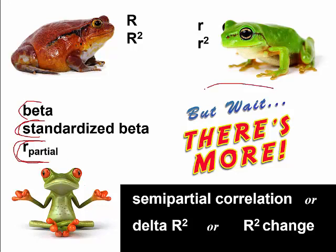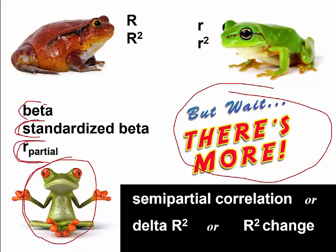But wait, there's more. In terms of the question about what is the effect of each variable controlling for the others, we could use a beta, a standardized beta, or a partial correlation — but there's also something called a semi-partial correlation. The semi-partial correlation can also be called a delta r squared, r squared change, or other names for the same thing. Let's take a look at what that is.